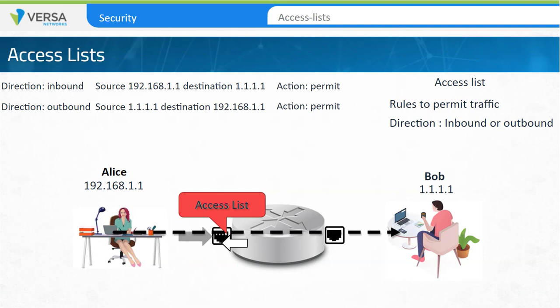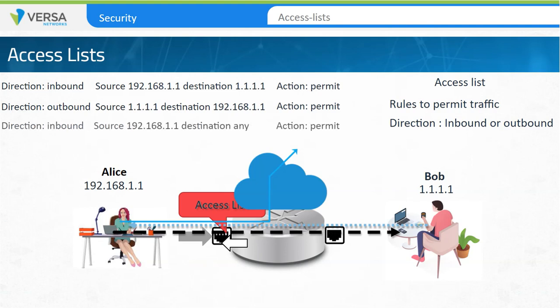A common scenario is when user Alice is required to access any application on the internet. To enable this behavior, a rule can be created that matches Alice's source address and any destination address and permits the traffic. The return rule would also have to allow any internet traffic to connect to Alice's IP address, which can be a major security issue. Access lists are stateless.